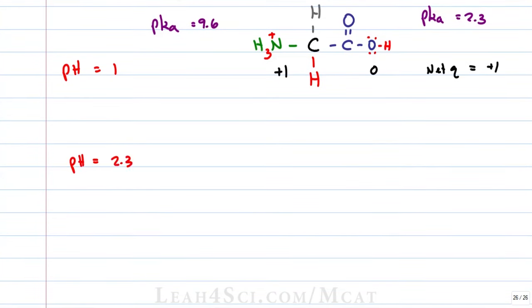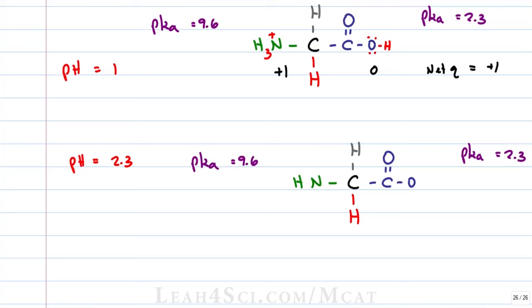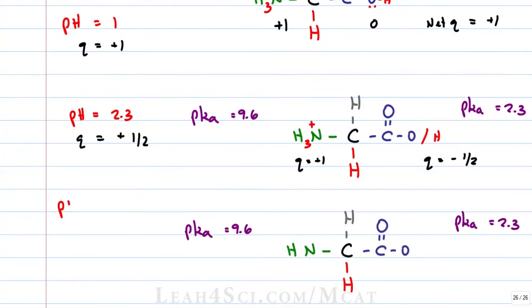If we raise the pH to the first pKa of 2.3, we get a buffer at the first pKa. The carboxy group will be partially protonated and partially deprotonated — half the molecules have a −1 charge, half are neutral — so the charge equals −½. The amine has a pKa greater than the pH and will be protonated for a charge of +1. The net charge of +1 minus ½ equals +½. If we raise the pH to 7, near physiological pH, that's where we expect to see the zwitterion. The amine pKa (9.6) is higher than pH, so it's protonated: charge +1. The carboxy pKa (2.3) is lower than pH, so it's deprotonated: charge −1. Adding +1 and −1, the charge equals zero — this is our zwitterion.